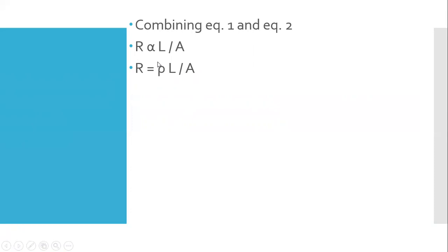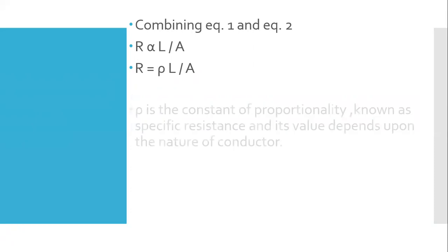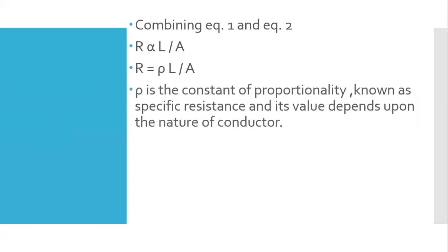You know this symbol ρ — in class 9 we used it in the pressure formula P equals ρgh. Here it is used as the constant of proportionality and is known as the specific resistance of the conductor. Its value depends upon the nature of the conductor.